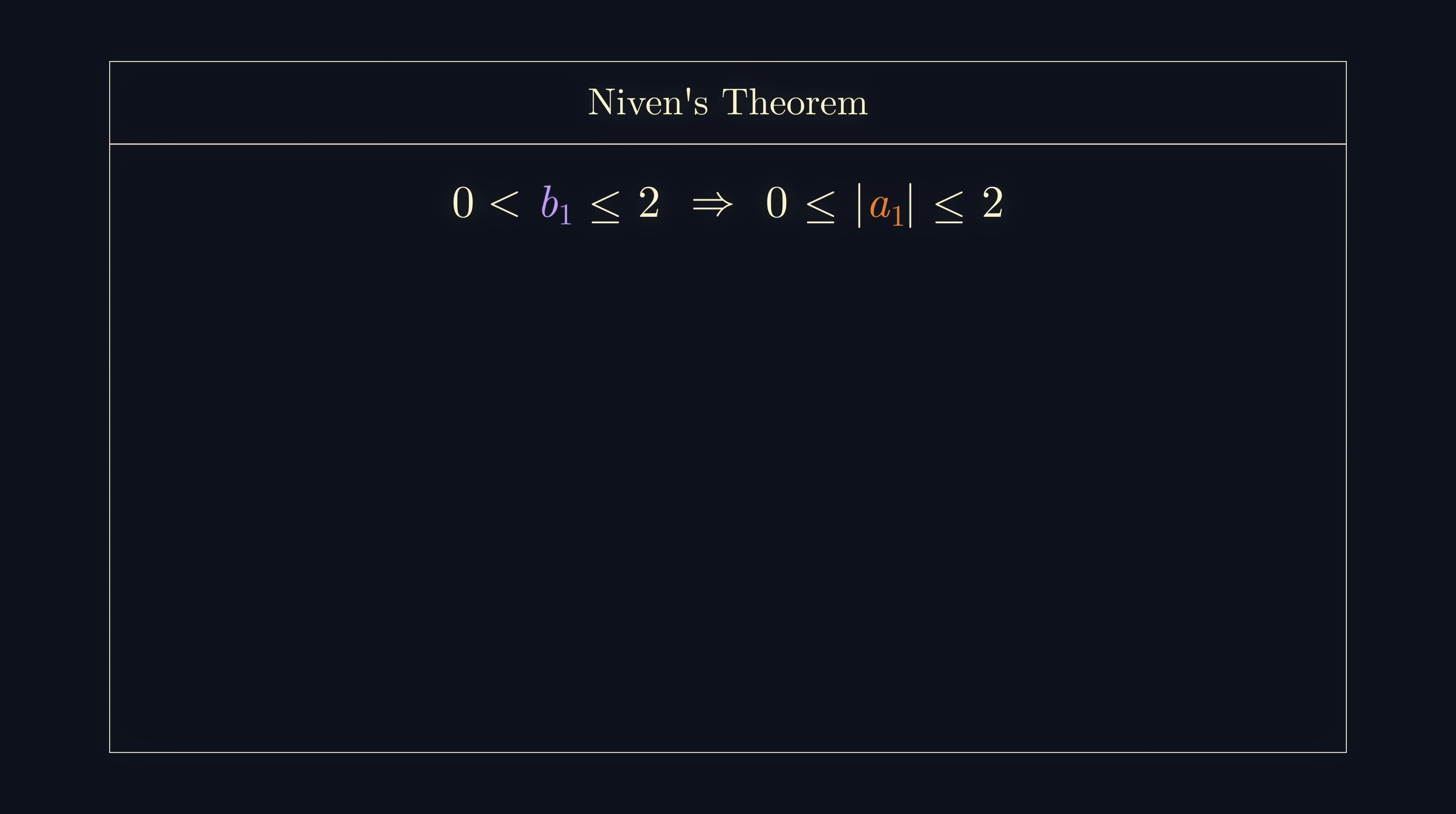That means that b must be less than or equal to 2. So, the only rational values of cosine, and for that matter sine, are the ones we're all familiar with, 0, a half, 1, minus a half, and minus 1.